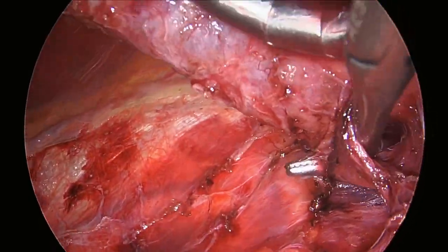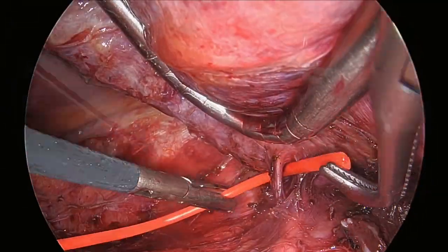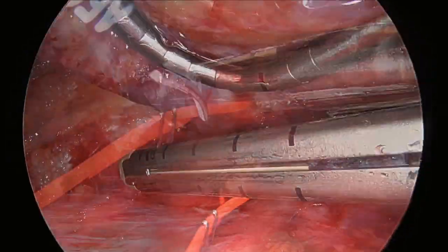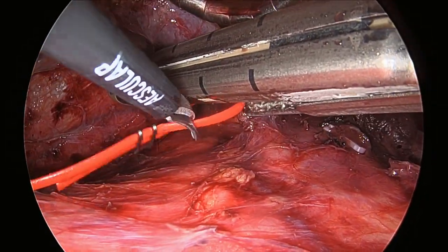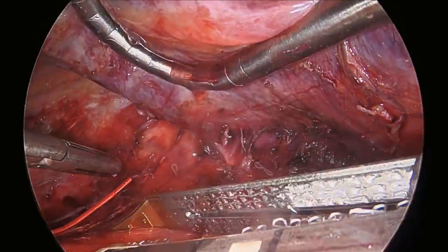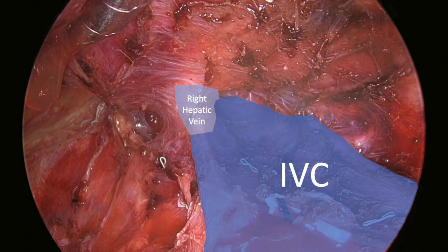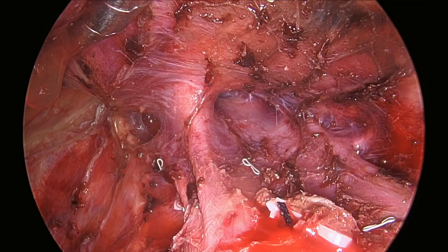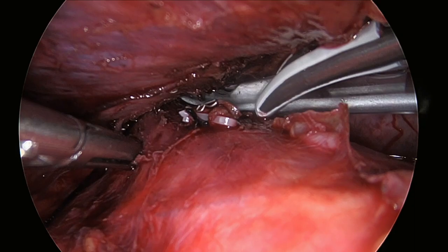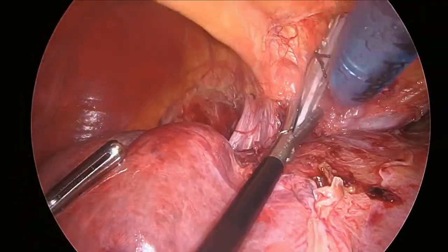As the dissection continues cranially, the caudate ligament is then isolated and divided with an endo-GIA stapler. At this point, we have a great view of the right hepatic vein insertion on the inferior vena cava, with the groove between the right and middle veins identified. A nasogastric tube is passed between the groove to help with preventing any inadvertent injury to the right vein during the parenchymal dissection, and to help with any sort of possible hanging maneuver.